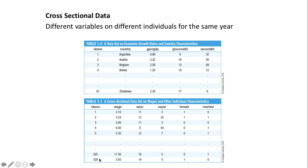Another example of cross-sectional data has 526 observations. We have wage, educational level in years, years of experience, and dummy variables — one for married, one if it is a woman. You have to decide what is the endogenous variable. Somebody would run a cross-sectional regression with wage on the left-hand side, and then years of education, years of experience, and the dummy variables on the right-hand side.